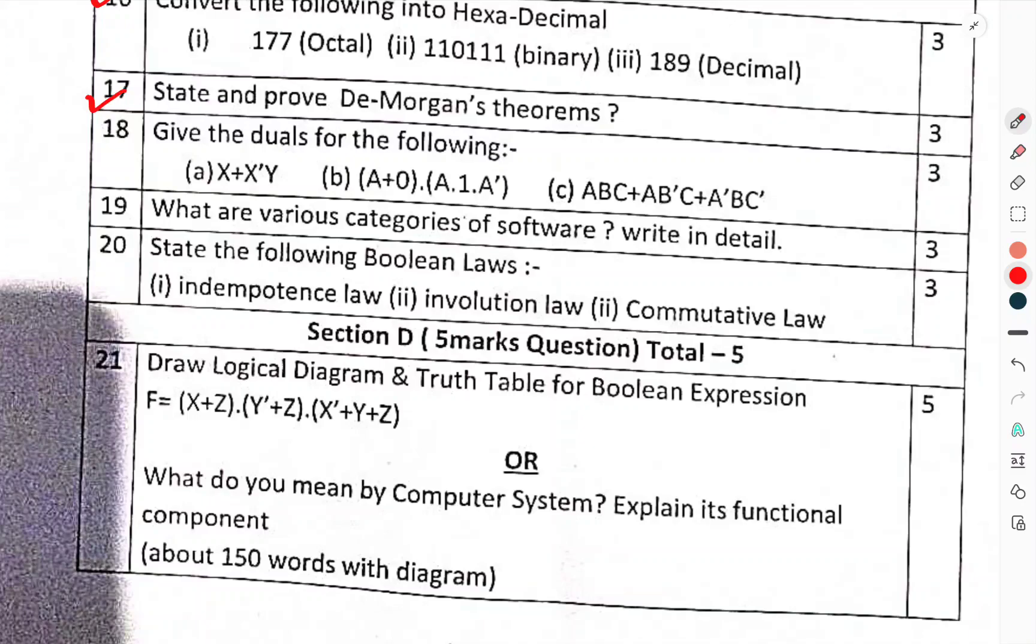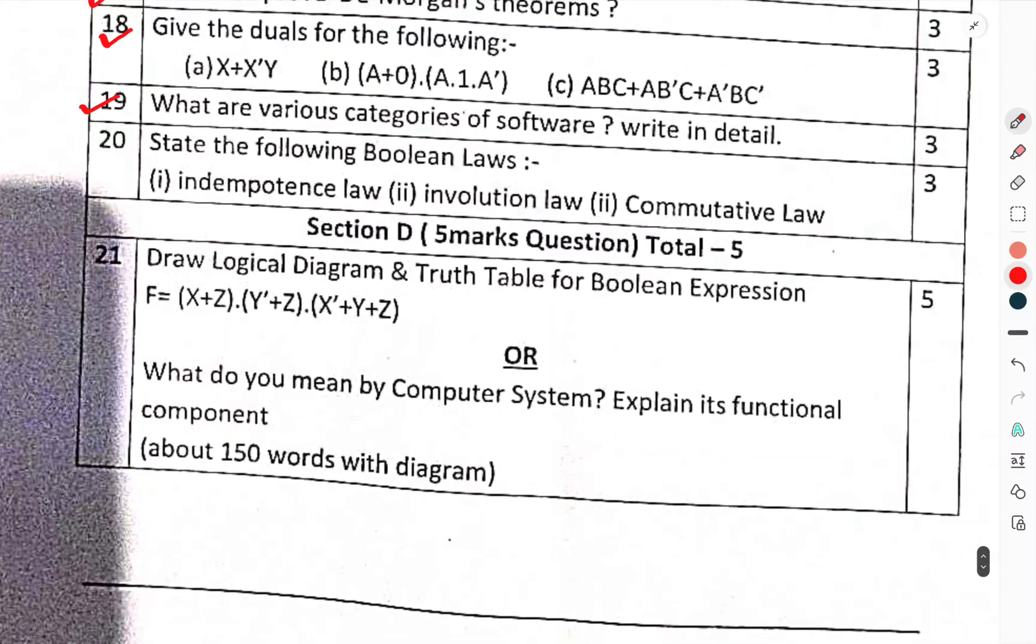Question 18: Give the duals for the following. What are various categories of software? Write in detail. State the following Boolean laws: Idempotence law, Involution law, Commutative law.